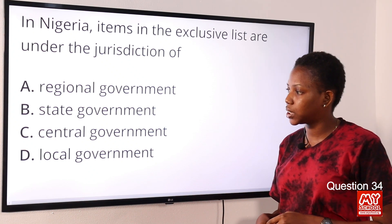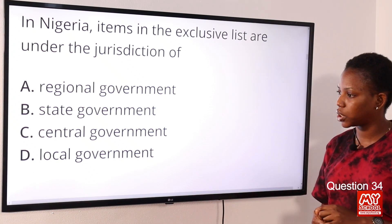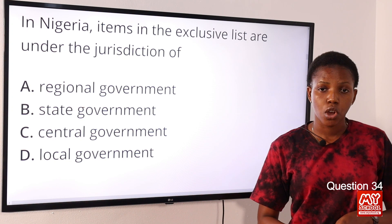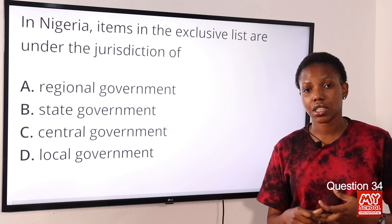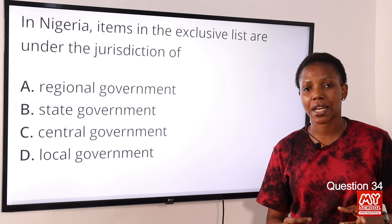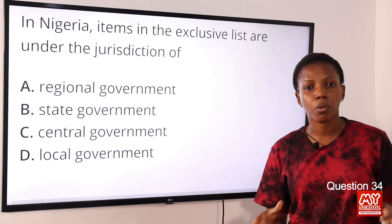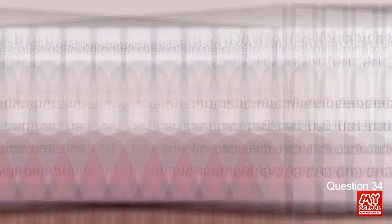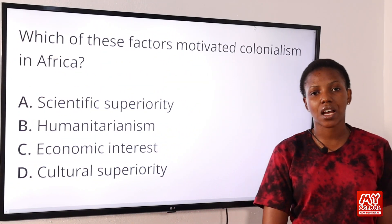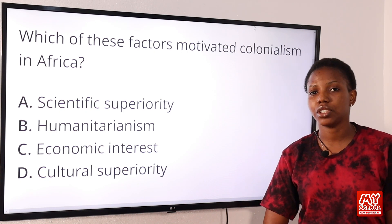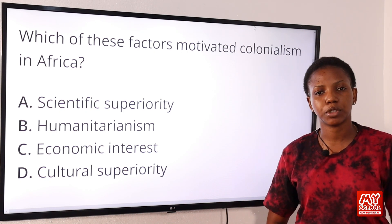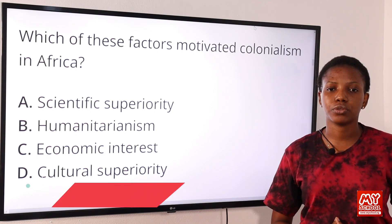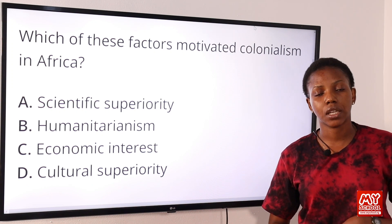Question 34: In Nigeria, items in the exclusive list are under the jurisdiction of — Option A: regional government. Option B: state government. Option C: central government. Option D: local government. The answer is Option C, central government. The exclusive list contains powers that can only be exercised by the central government, also known as the federal government. Please take practice questions with our simulated JAMB CBT past questions via the link in the description — download the MySchool mobile app for Android or MySchool software for computers.